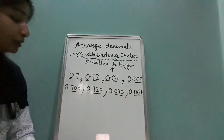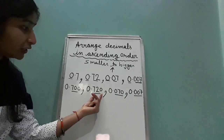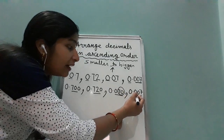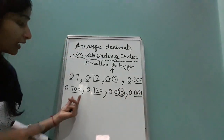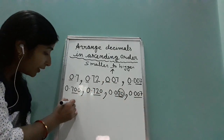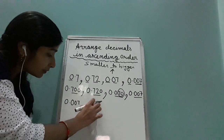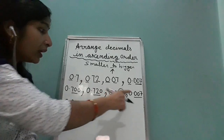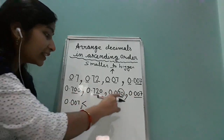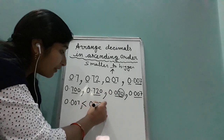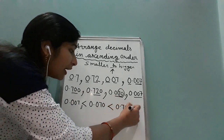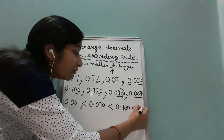Now compare the decimal parts: 700, 720, 070 means 70, and 007 means 7. The smallest is 7. So ascending order: 0.007 is less than 0.070, then 0.700, and the largest is 0.720.